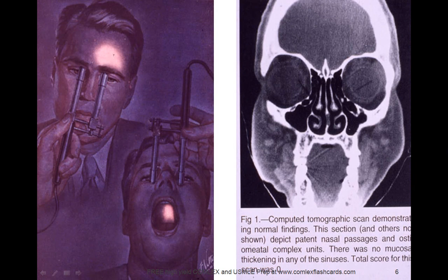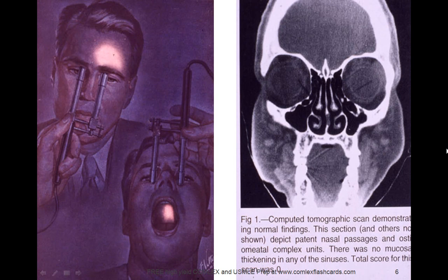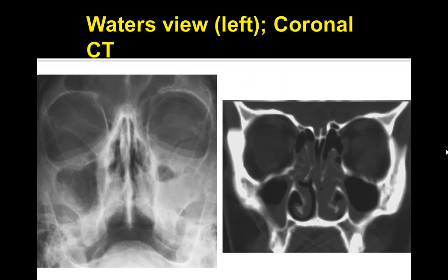Here is an image showing a CT scan of a normal finding. On the left, you can look at various physical exam findings that you can carry out to check the sinuses. It's very important to understand which sinuses you're looking at in order to make the correct diagnosis. Here is another view on the left showing the Waters view, and on the right, a CT scan showing the frontal, maxillary, and sphenoid sinuses.